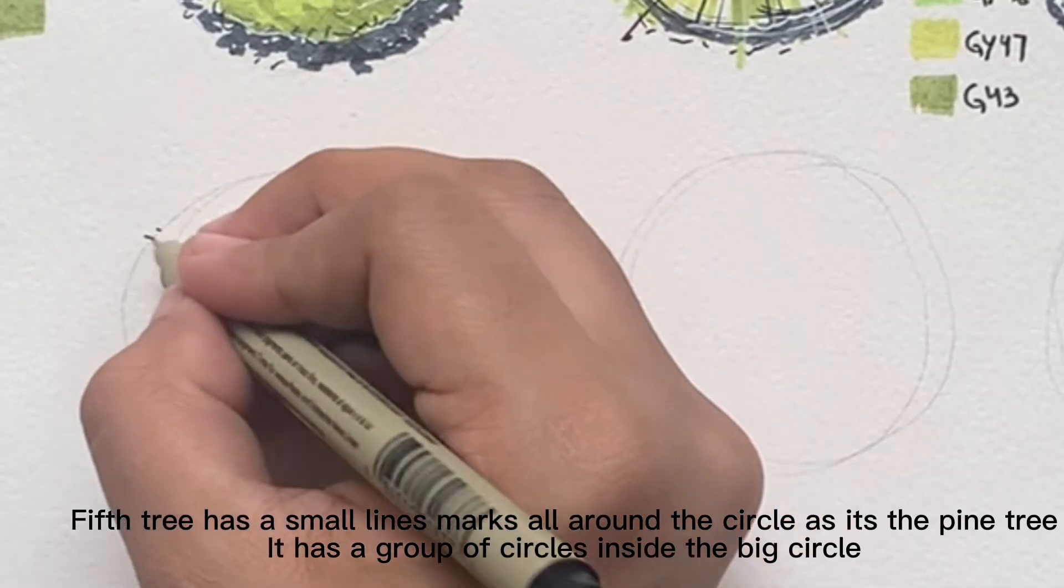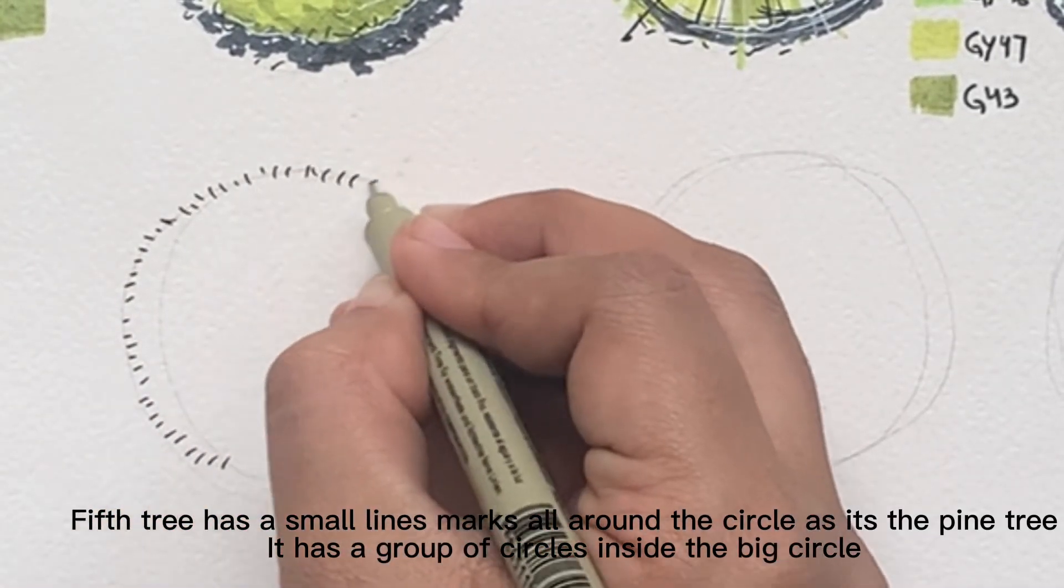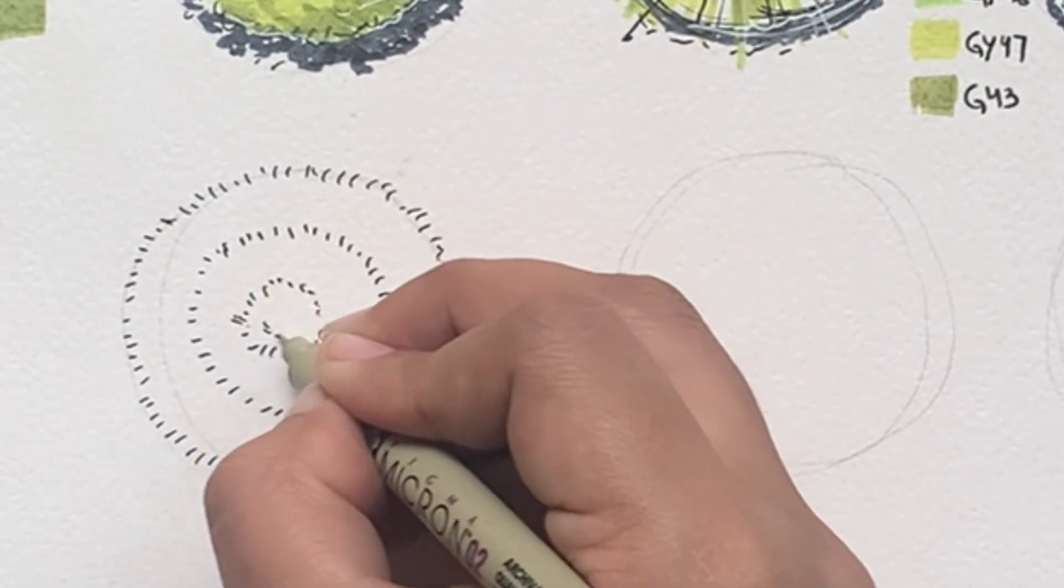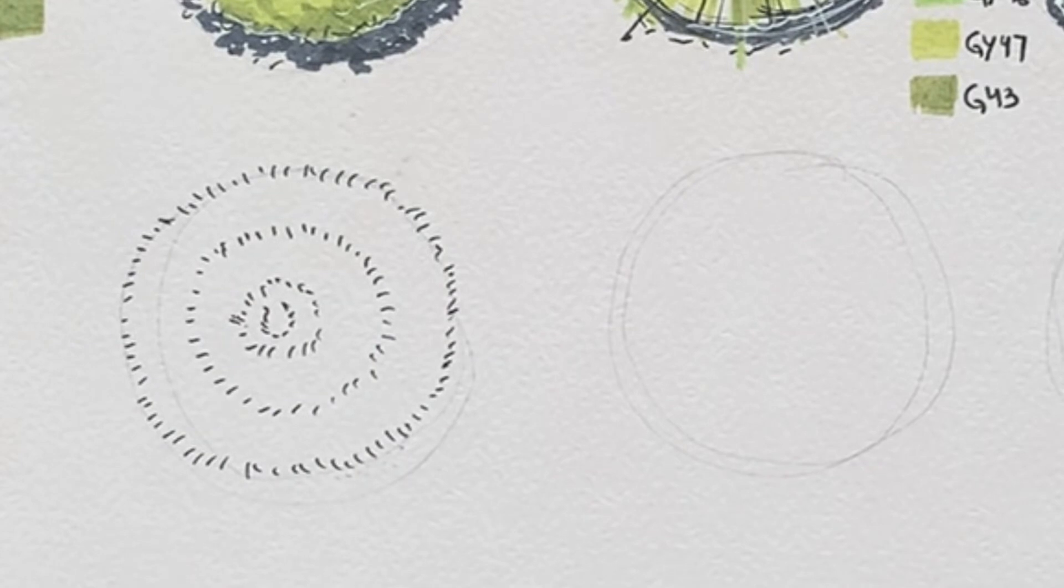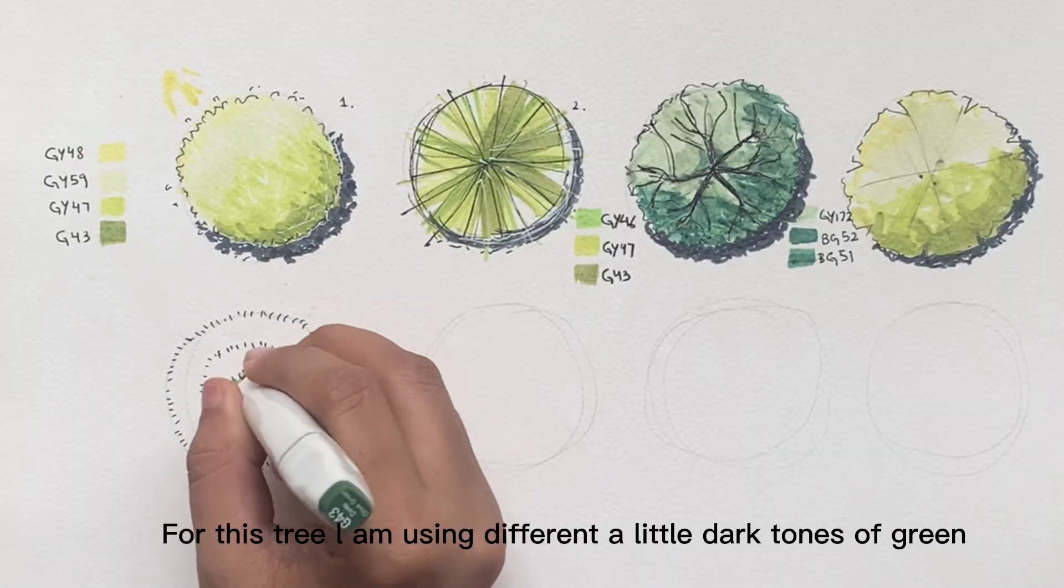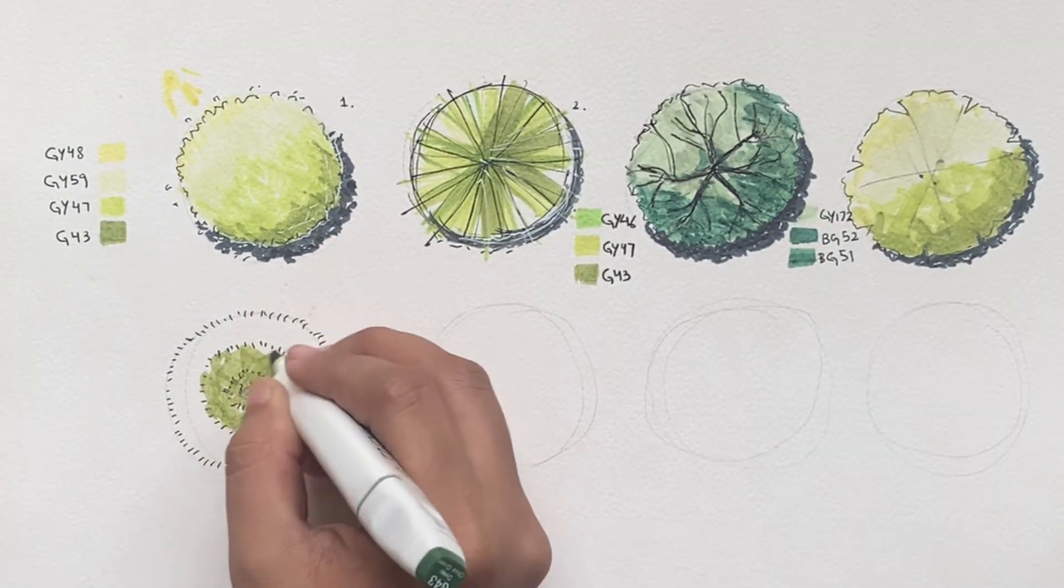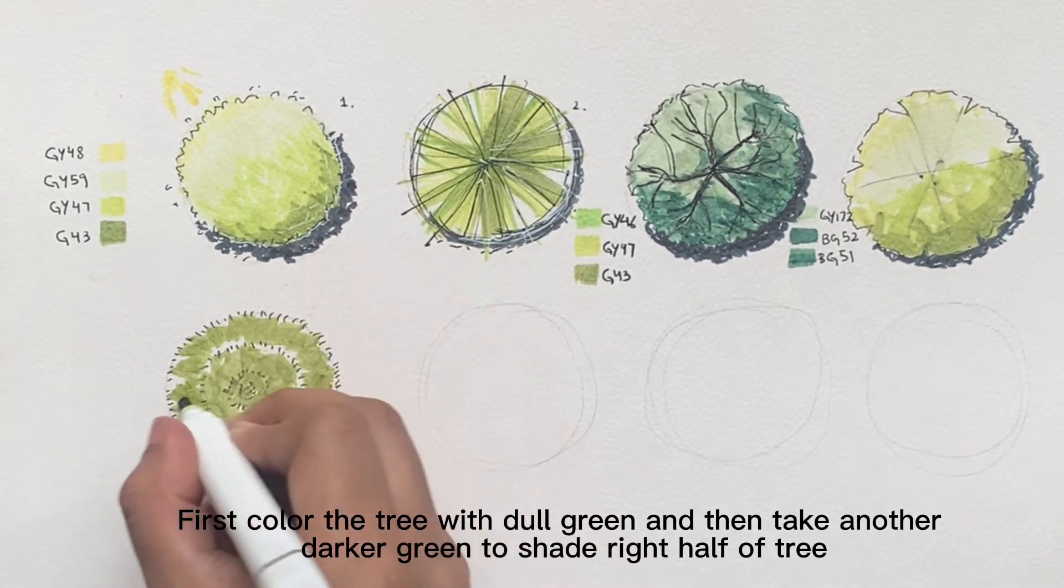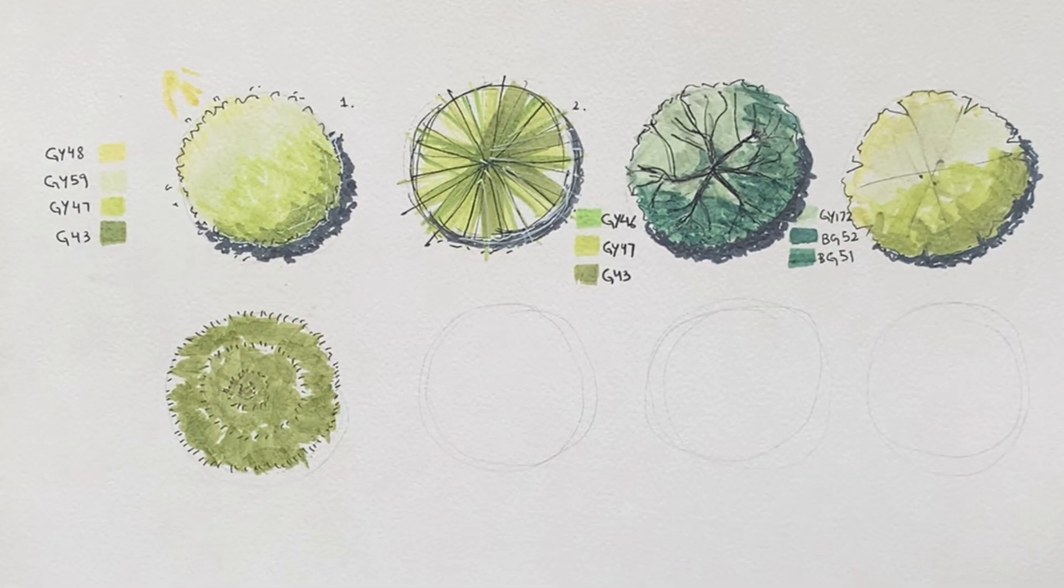Fifth tree has small lines marks all around the circle. As it's the pine tree it has a group of circles inside the big circle. For this tree I am using different, a little darker tones of green. First color the tree with dull green and then take another darker green to shade right half of tree.